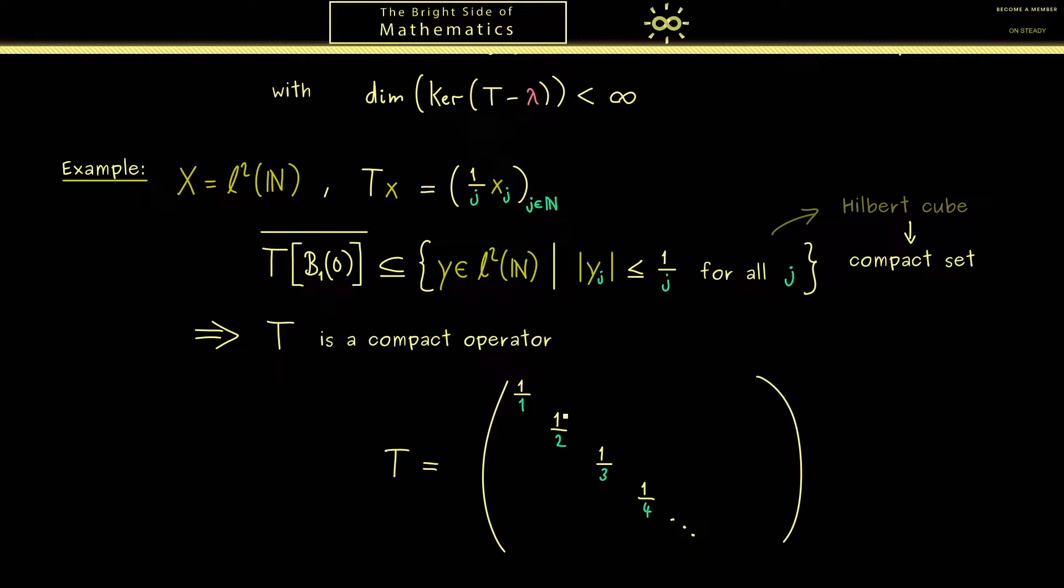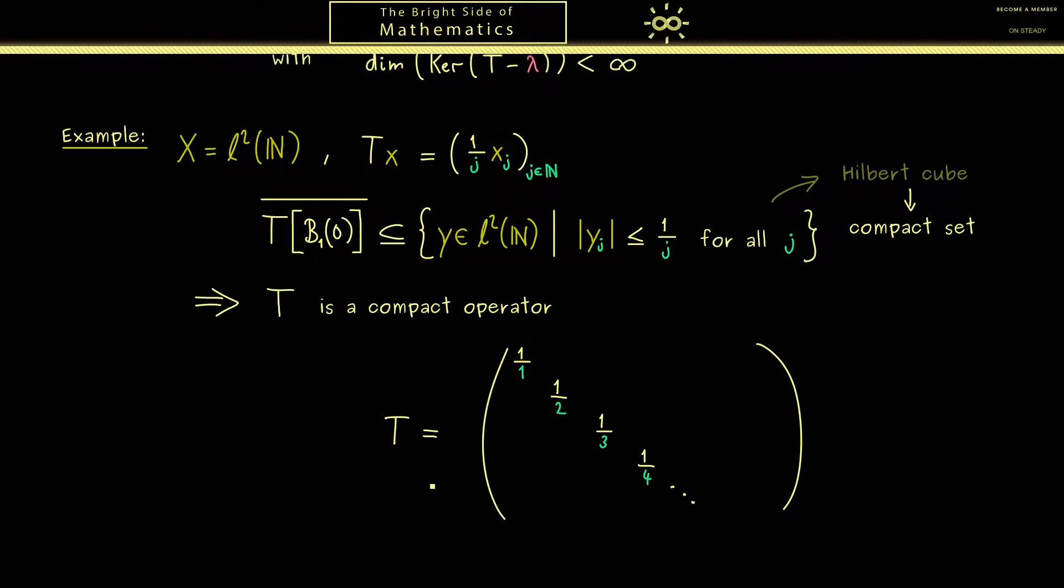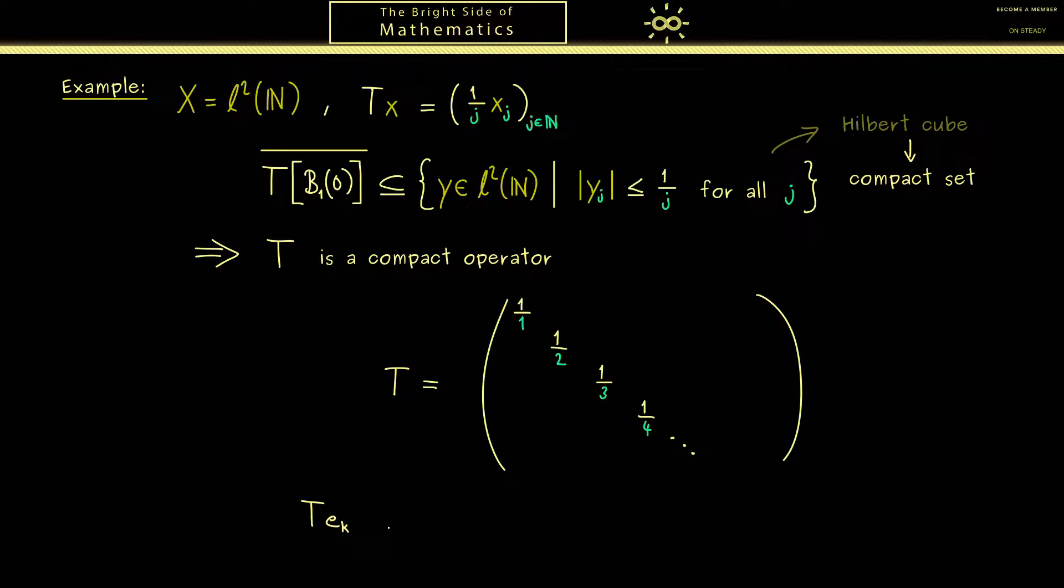And then, it's not hard to see that all the numbers here on the diagonal are actually eigenvalues. There, you can recall that we have done a similar thing in part 29. Indeed, we see that e_k is the corresponding eigenvector to the eigenvalue 1 over k. Moreover, we also see that the eigenspace should be one dimensional. Of course, from before we know it should be finite dimensional, but here we see it's also one dimensional.